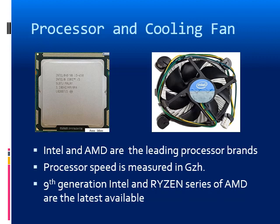The processor or the CPU is that part which carries out all the processing of the data. The popular brands are Intel and AMD. Its speed is measured in GHz. The 9th generation Intel and Ryzen series of AMD are the latest processors. The CPU generates a lot of heat; therefore, a fan is mounted on top of the processor. It can be considered as the radiator and coolant of a car.